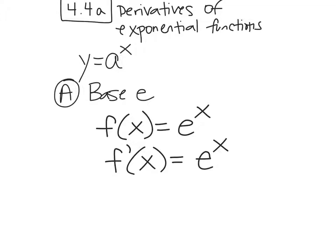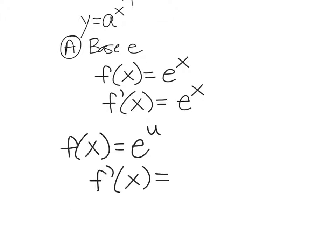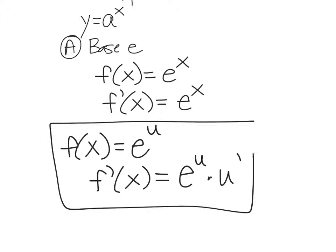They like to make you do chain rule a lot on these. So if you have something like the function e to the u, where u is a different function of x, the derivative would be e to the u itself — just like the derivative of e to the x is itself — and then times u prime. So you're taking the derivative of e to the x, which is itself, and then times the derivative of that inner function. It's just simple chain rule.